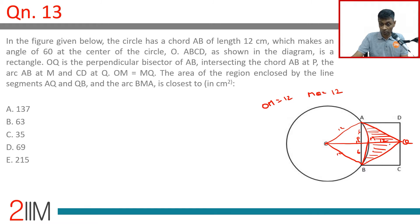MQ is 12, that we know. So how do we find this area? The shaded region is area of triangle ABQ minus area of segment AMB.